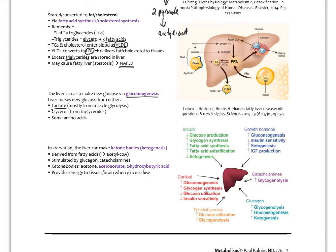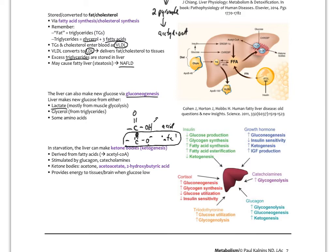Lactic acid is the acidic form. When we have an organic carboxylic acid in body solution, the hydrogen ion actually leaves, and we get the ionized form. Lactate doesn't have the hydrogen ion on it, and this is what usually exists at body pH. Lactate builds up in the muscles and has to be transported to the liver, where it can be reconverted back into glucose. That's called the Cori cycle. Gluconeogenesis can also use glycerol from triglycerides, or some amino acids called glucogenic amino acids.